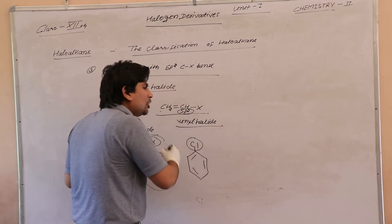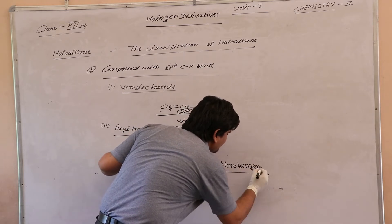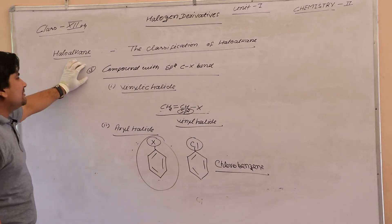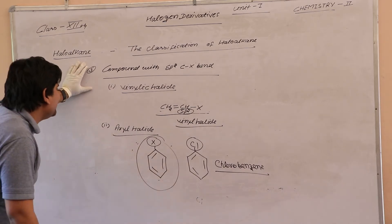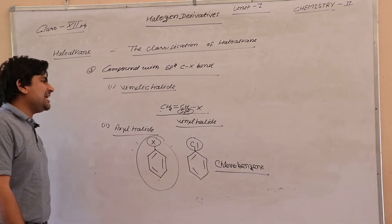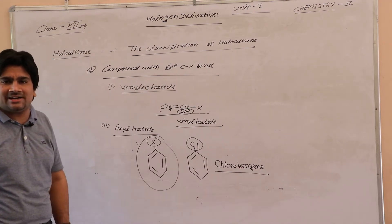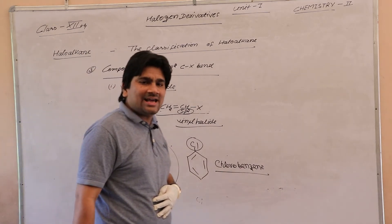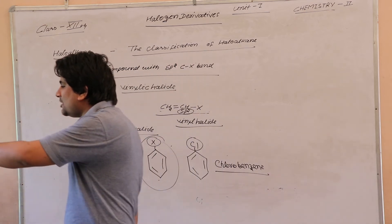To summarize: compounds with SP2 C-X bond are divided into two types — vinylic halide and aryl halide. In vinylic halide, the halogen atom is directly attached with SP2 hybridized carbon atoms. In aryl halide, the halogen atom is directly attached with the aromatic ring. This completes the classification of haloalkenes.